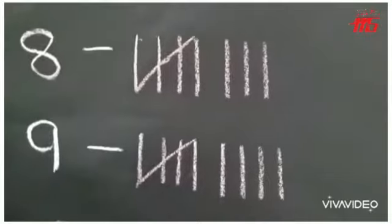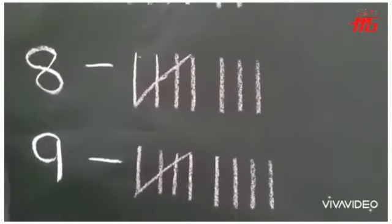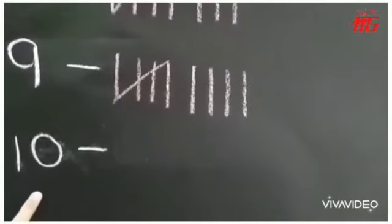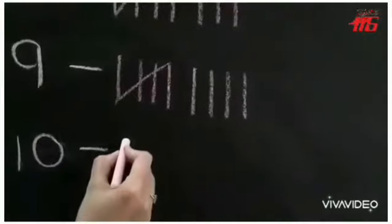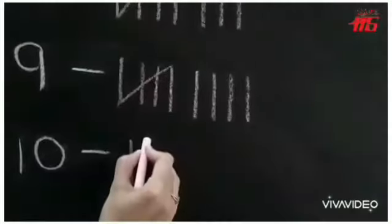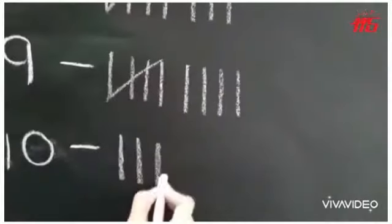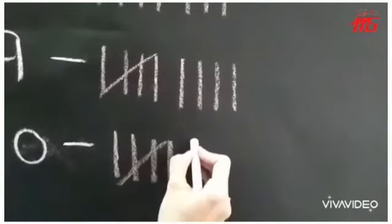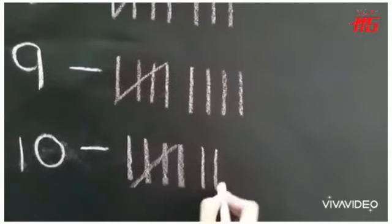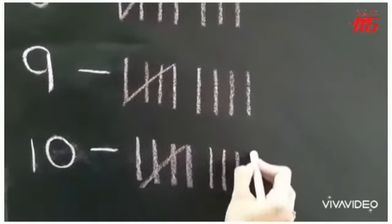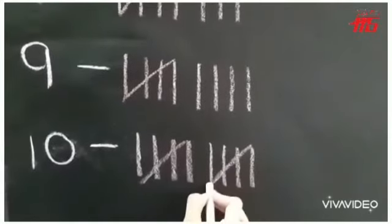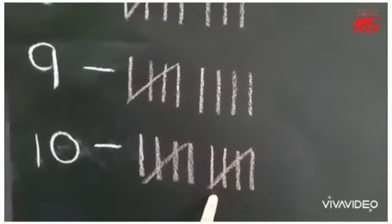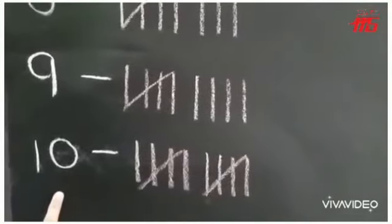Now as we did something special for number 5, we are going to do something special for number 10. Again we are going to sing a little song. Come on everybody. 1, 2, 3, 4 — number 5 shuts the door. 6, 7, 8, 9. Number 10 crossed the line! The 10th line will again close the gate. For number 10, we are having 2 gates.